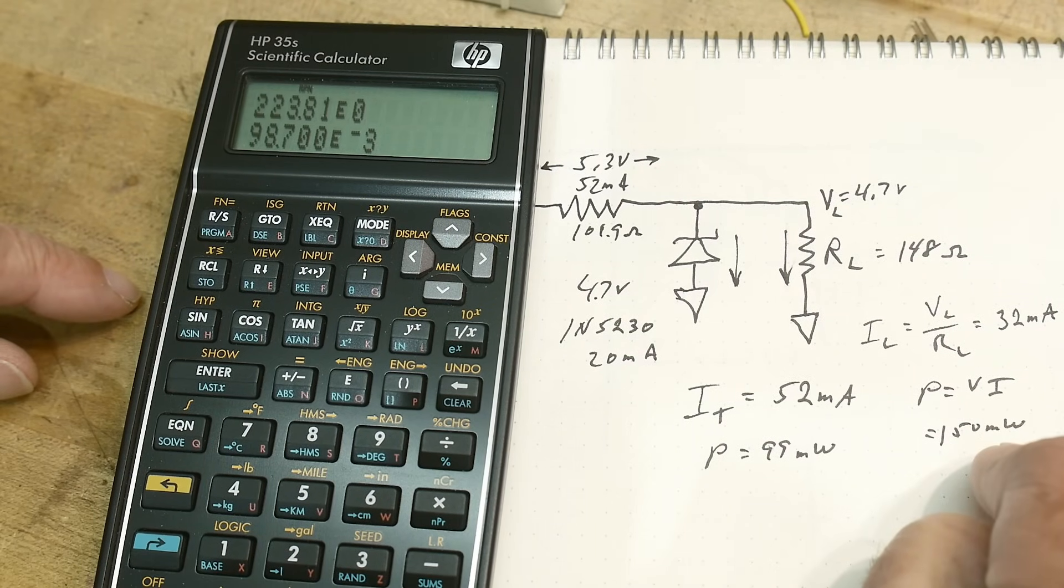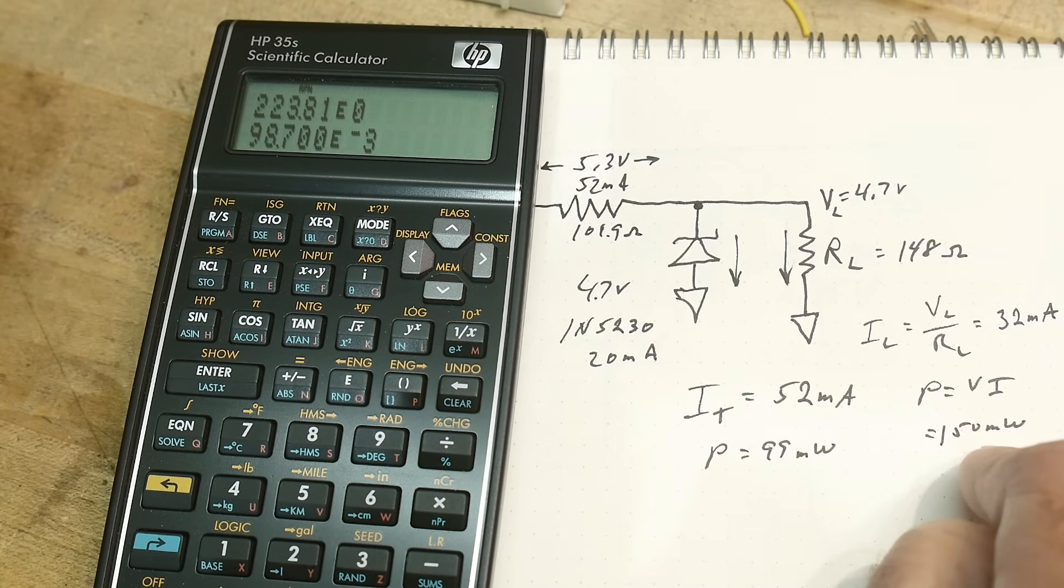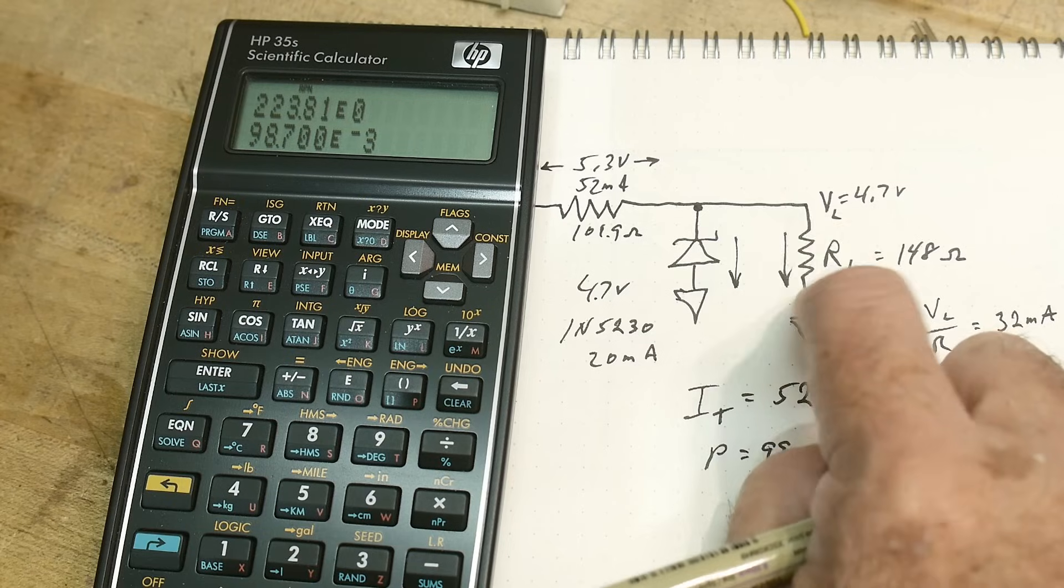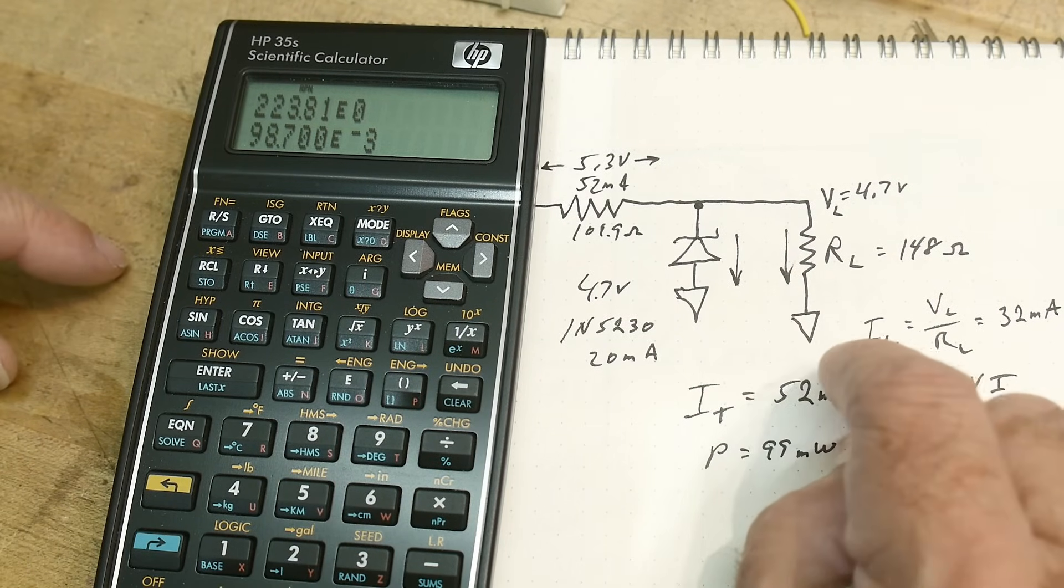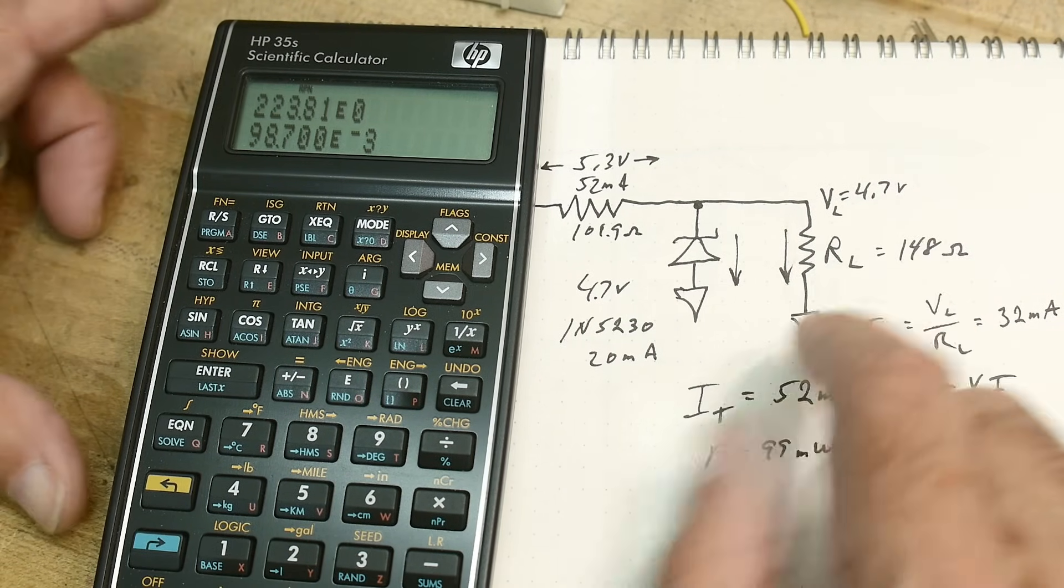150 milliwatts. Quarter watt resistor is 250 milliwatts. So even a quarter watt resistor here would be okay on our circuit. But I have a half watt resistor just because I have one.